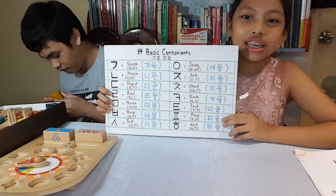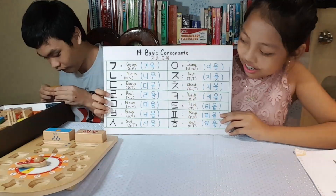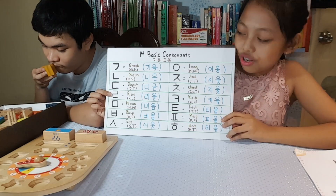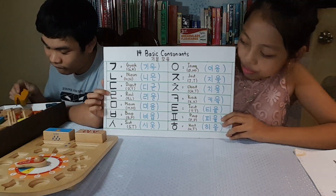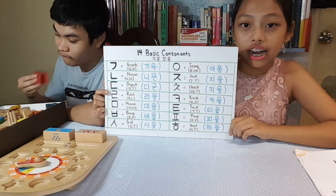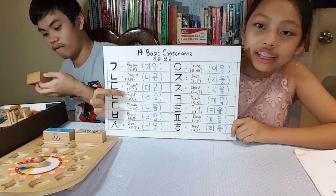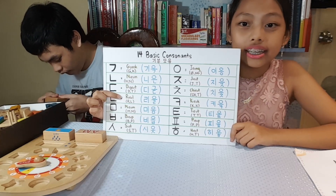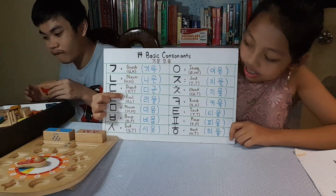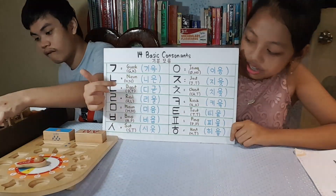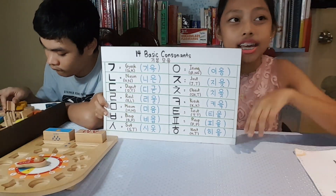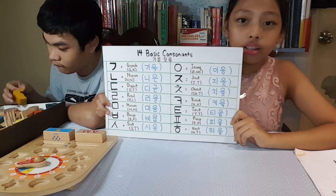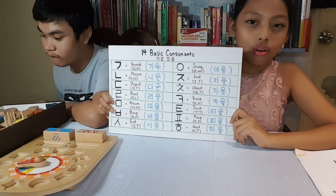The next basic consonant sounds like 'Ruh.' This one is the Hangul symbol or the Korean alphabet character. And over here is Ri-ul, the romanization name. The consonant Ri-ul is R sound in the beginning and L sound in the final or in the end.